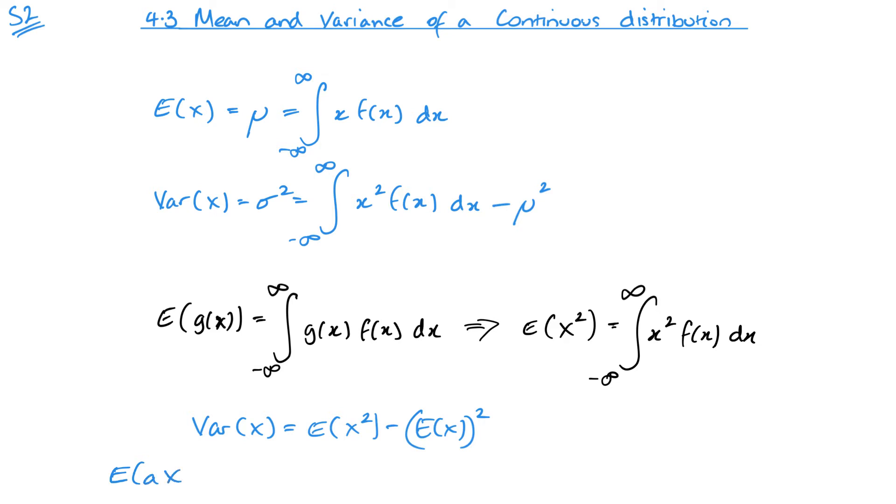A couple of other things from S1. You've got E of ax plus b. That is a times E of x plus b. Very similar with the variance, but if you remember with the variance it would be a squared times the variance of x, but the added or subtracting b doesn't affect the variance. These are just some additional notes to remember, and they are useful as we go through.